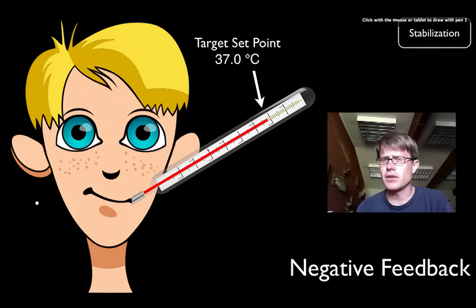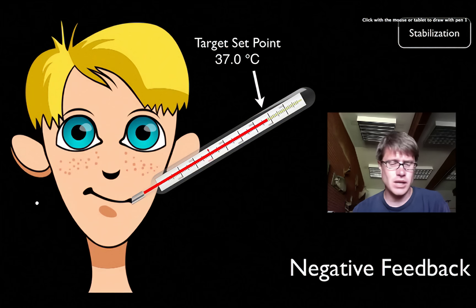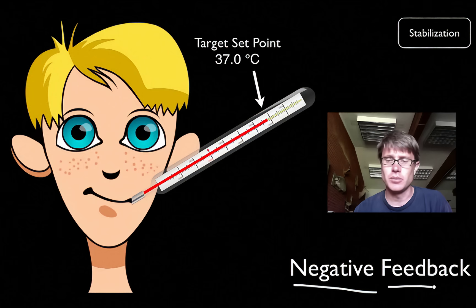As a result we're going to have less convection and our body is going to increase until we hit that target set point. Right now in fact throughout the whole day your body is just regulating your body temperature through a negative feedback loop, trying to maintain that target set point.